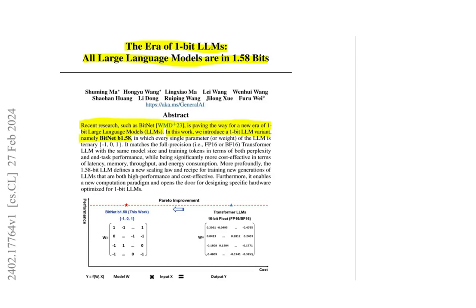In this work they introduce a one bit LLM variant, namely the BitNet b1.58, in which every single parameter or weight of the LLM is ternary: minus one, zero, and one. If you are confused why they call it b1.58 instead of b1, you know that in order to represent three values you will need log base 2 of 3, which is equal to 1.58 bits.